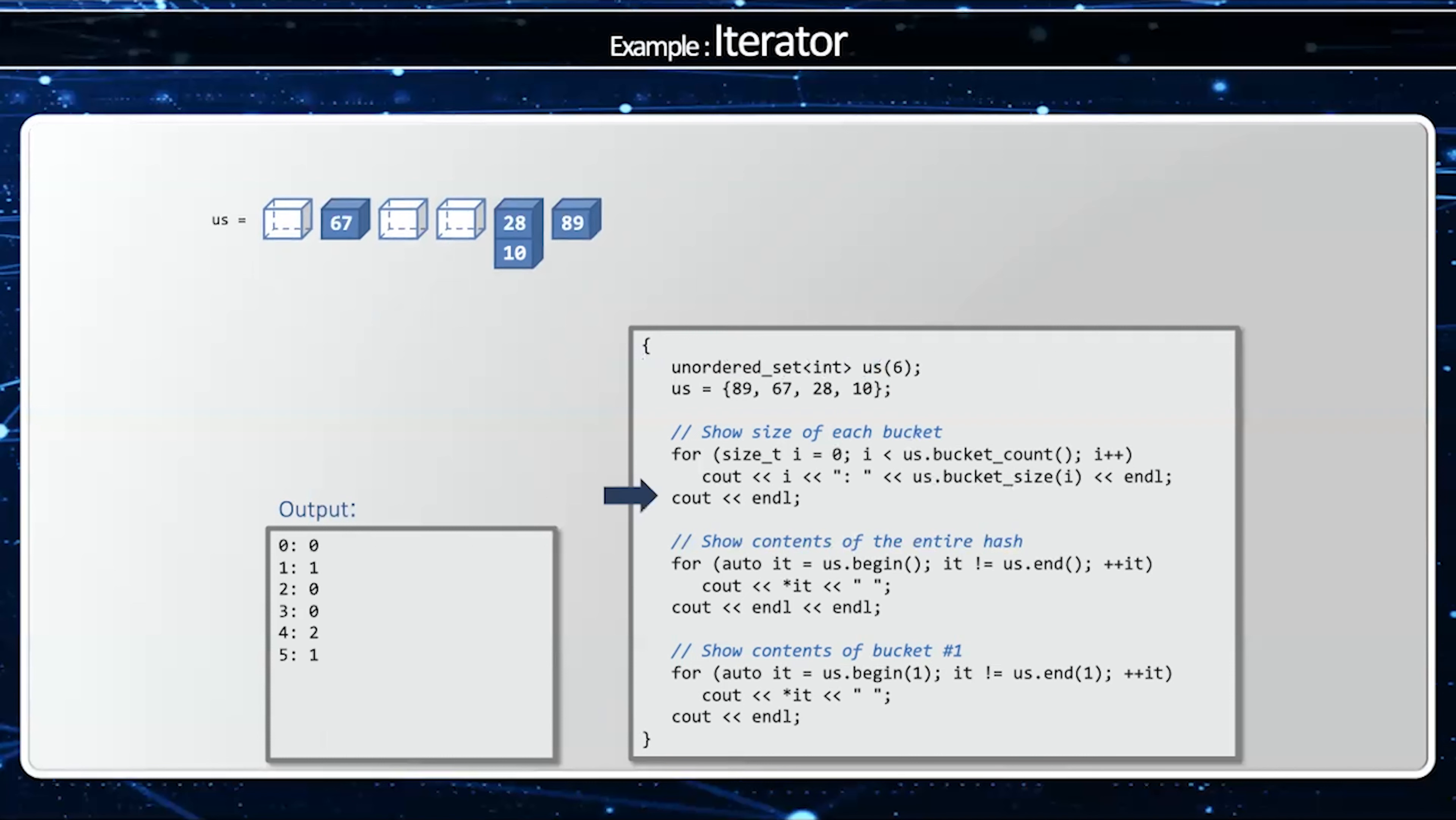And 10 mod 6 will also give me 4. So when I look at the size of each bucket I'm going to get 0, 1, 0, 0, 2, 1. When I show the contents the entire hash once again I will start at bucket 0.